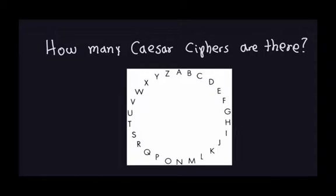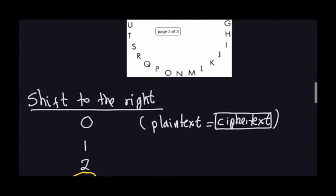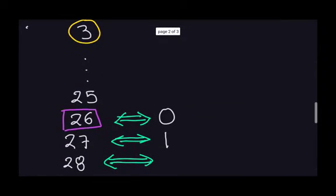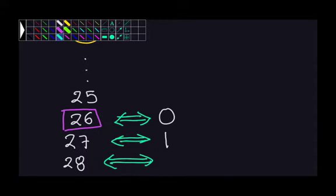Hello again. I had to stop the previous video because it was getting too long. From the previous example, we were analyzing the question: how many Caesar ciphers are there? We were doing the analysis for 26, and we realized that 26 is exactly the same as a shift of 0 clockwise. 27 clockwise is exactly the same as 1, and 28 clockwise is exactly the same as shifting 2 units.